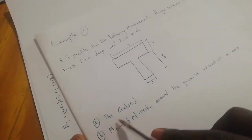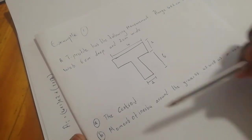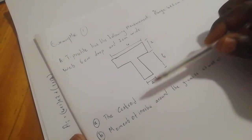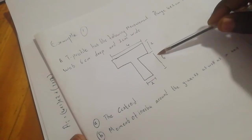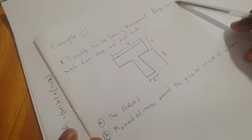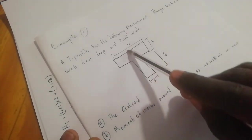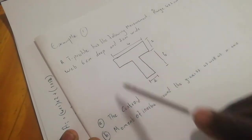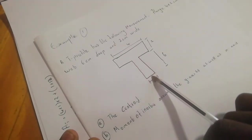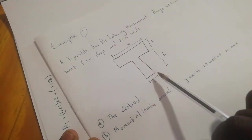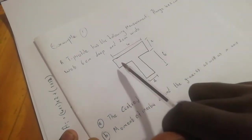Our first question is to calculate the centroid. When you cut it on the X-axis, it is not symmetric, so we have to calculate the centroid. But when we cut it on the Y-axis, it is symmetric, and that gives us the centroid on the Y-axis as half of four, which is two.